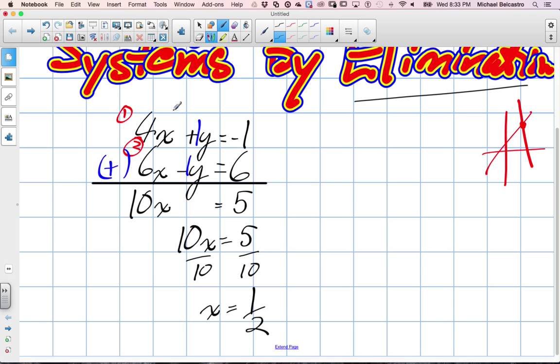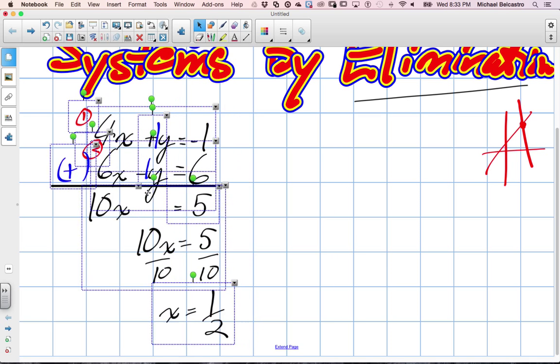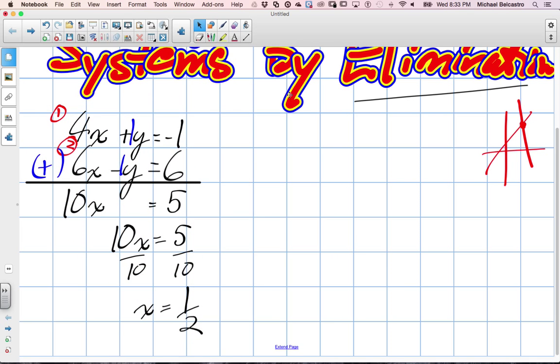Now, I could use substitution and plug it into another equation, but the whole point of this is to do elimination. So instead of eliminating the y, we're going to eliminate the x in this version. So we'll write the same stuff over again, 4x plus y.